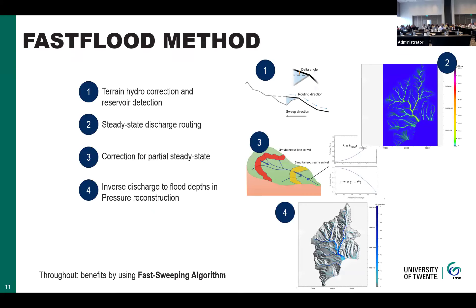There are four steps to the algorithm. Step one is terrain correction and reservoir detection. Step two is steady-state discharge routing — since you don't have steady states in nature, you can't use those directly. Step three corrects for the partial steady state in a real rainfall event watershed. Step four takes the discharge predictions for the entire space and reconstructs the floodplain water heights. Importantly, you can skip steps one through three and just provide a discharge boundary condition, letting step four produce the inundation map.